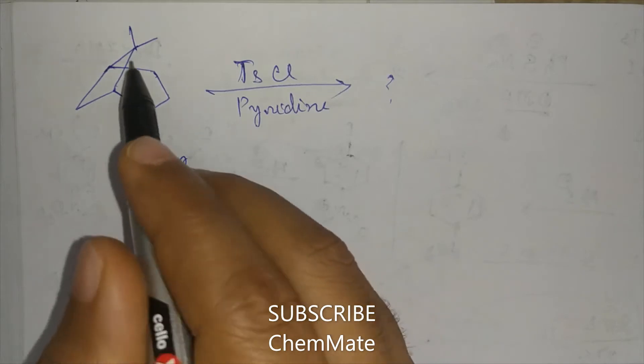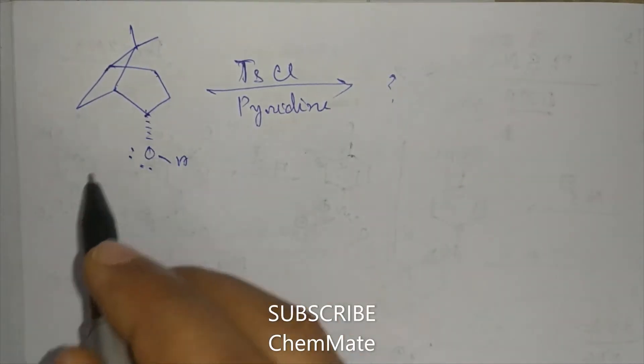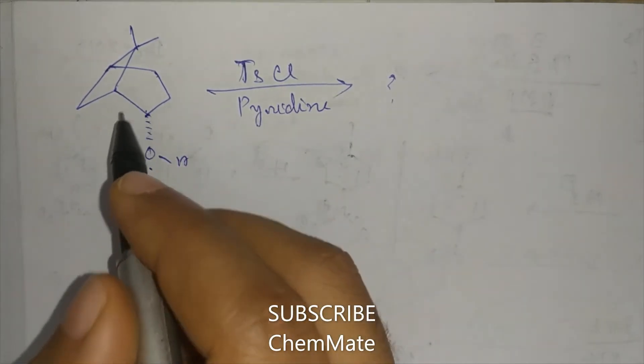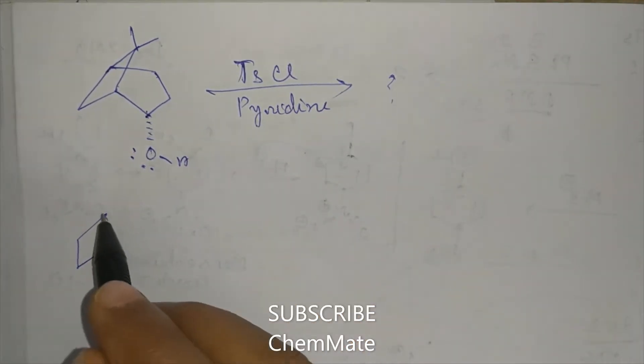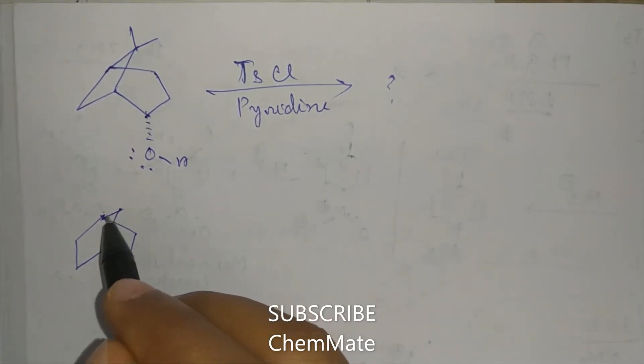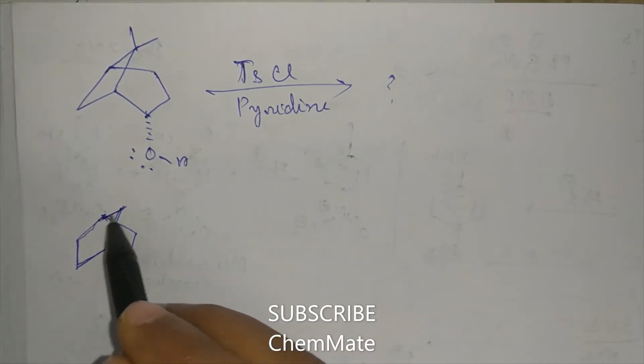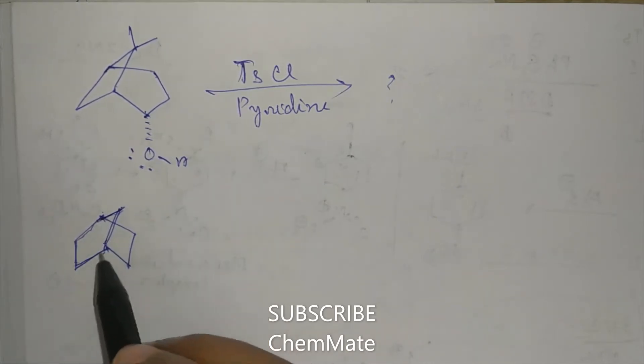So this is the bridged bicyclic system. In bridged bicyclic systems, giving an example, this is a bridged bicyclic system. Here two five-member rings, this one and this one, are bridged into carbon atoms.